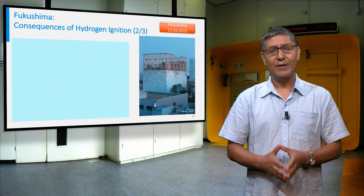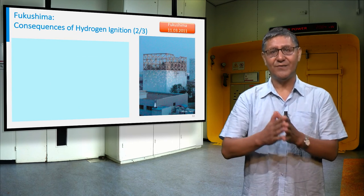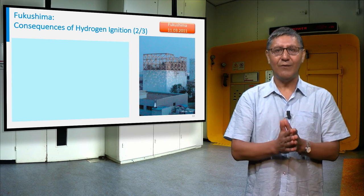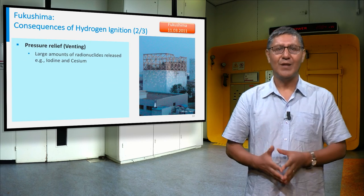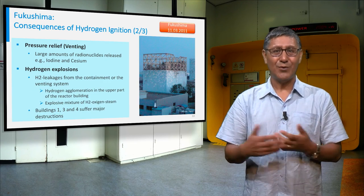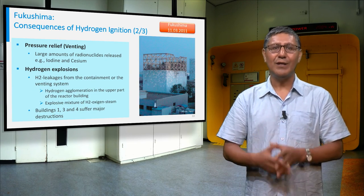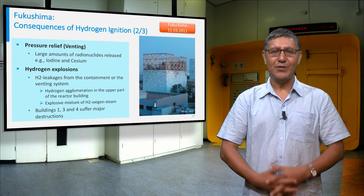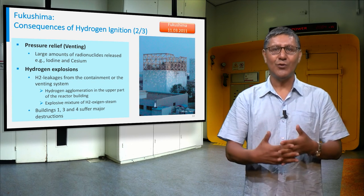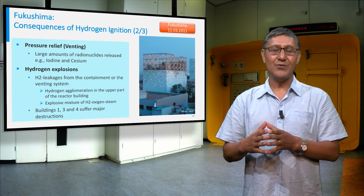To avoid damage to the containment building, the reactor was vented. However, due to a valve failure, a large amount of hydrogen, steam, and fission products entered into the reactor building, forming critical mixtures with oxygen and causing explosions that destroyed the reactor building.